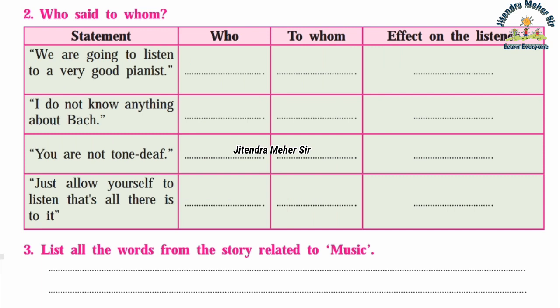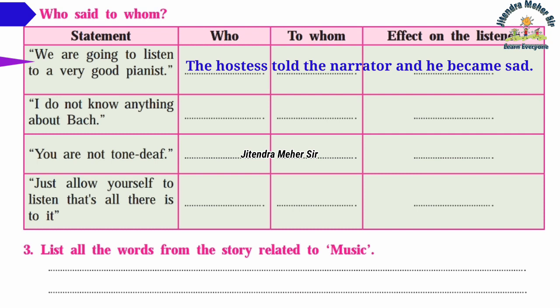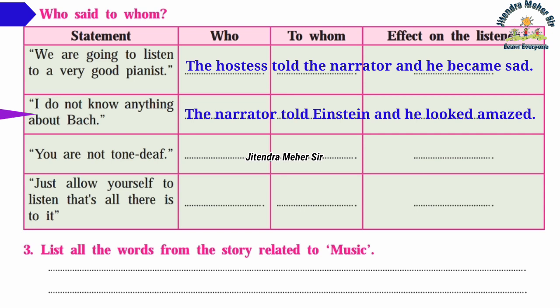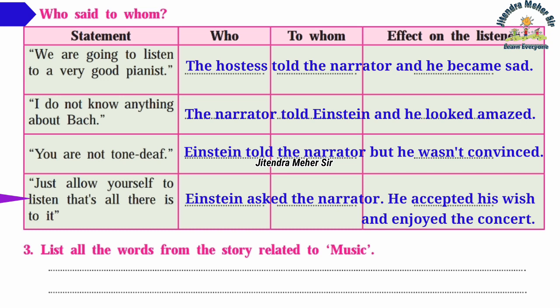Activity two: Who said to whom, and what was the effect on the listener? First: 'We are going to listen to a very good pianist' — the hostess told the narrator and guests; effect: the narrator became sad. Second: 'I don't know anything about Bach' — the narrator told Einstein; effect: Einstein looked amazed. Third: 'You're not tone deaf' — Einstein told the narrator, but the narrator was not convinced. Last: 'Just allow yourself to listen, that's all there is to it' — Einstein asked the narrator; the narrator accepted.